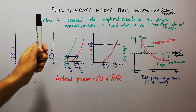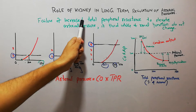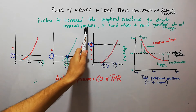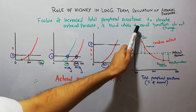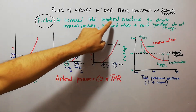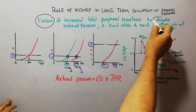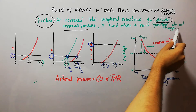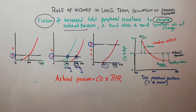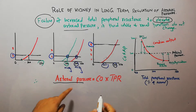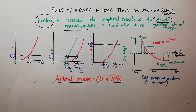Today in this lecture we are going to discuss the failure of increased total peripheral resistance to elevate or increase the arterial pressure if fluid intake and renal functions do not change. The arterial pressure is basically a product of cardiac output into total peripheral resistance.